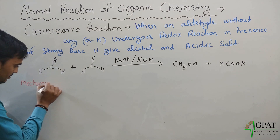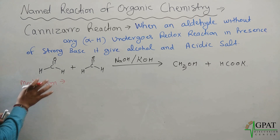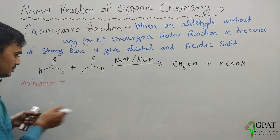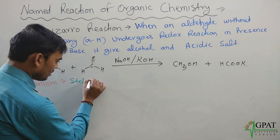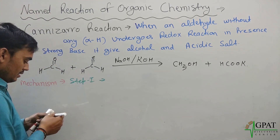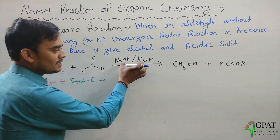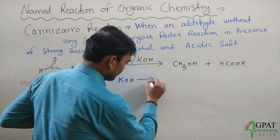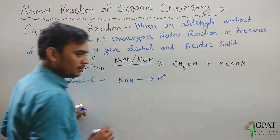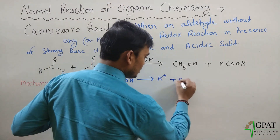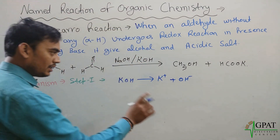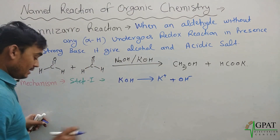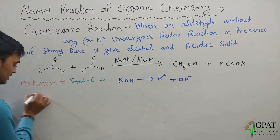Now let's discuss the mechanism of this reaction. The mechanism proceeds in three steps. In step one, the base KOH breaks down to give a potassium ion (K⁺) and a hydroxide ion (OH⁻).